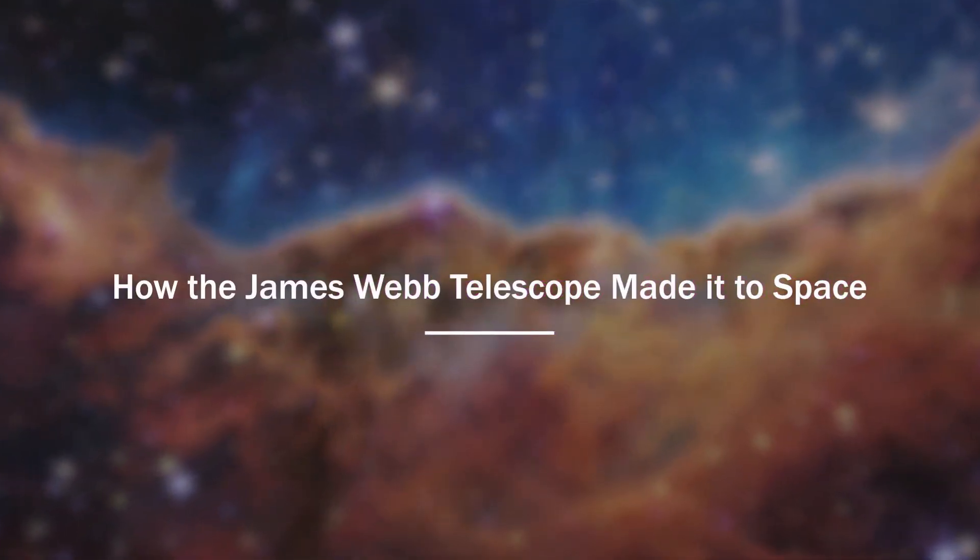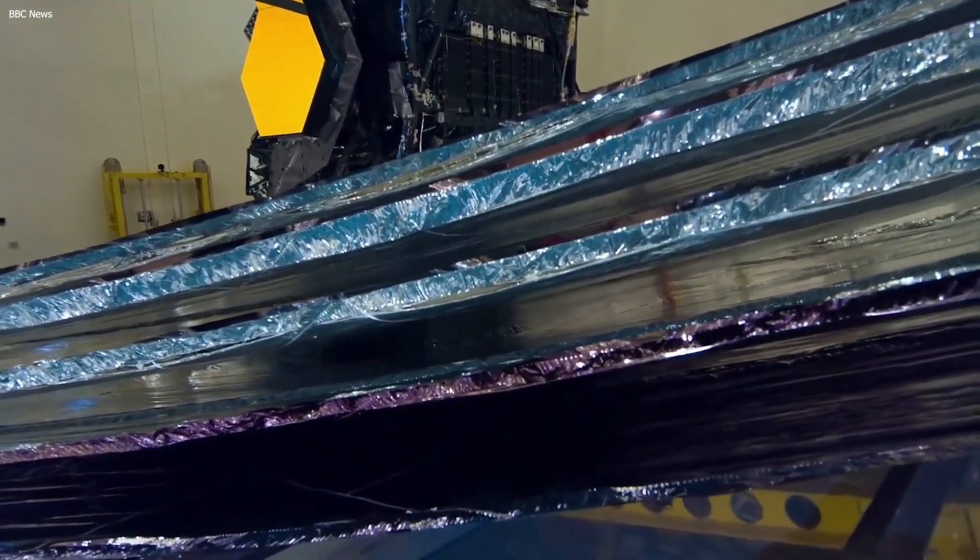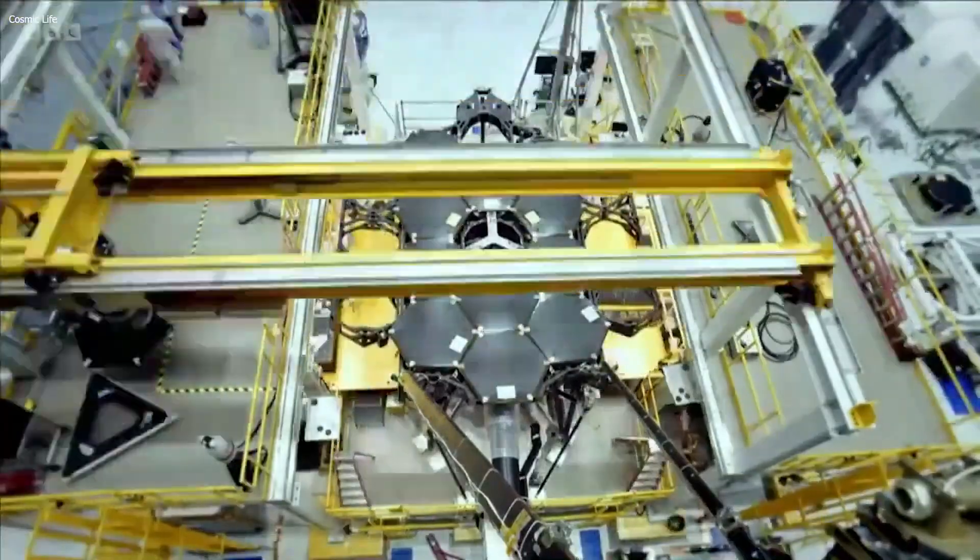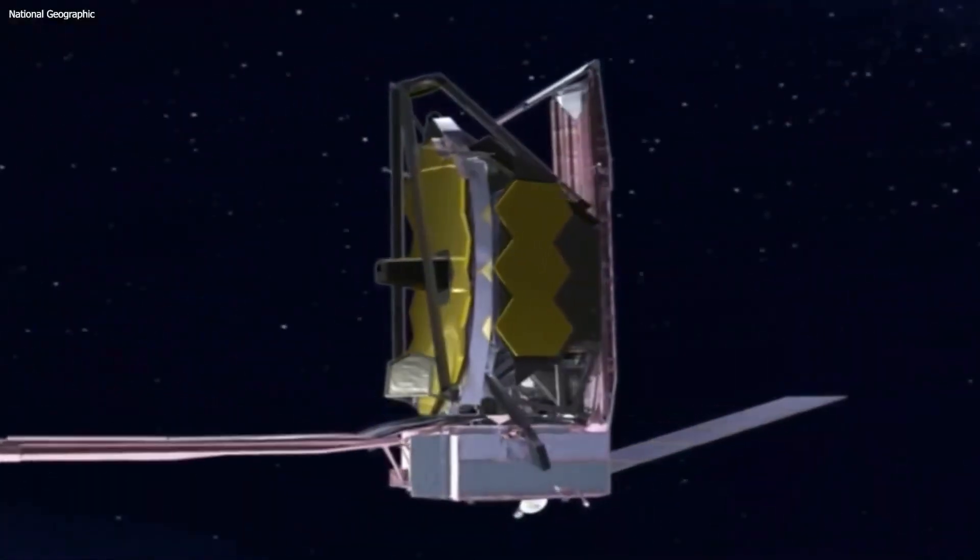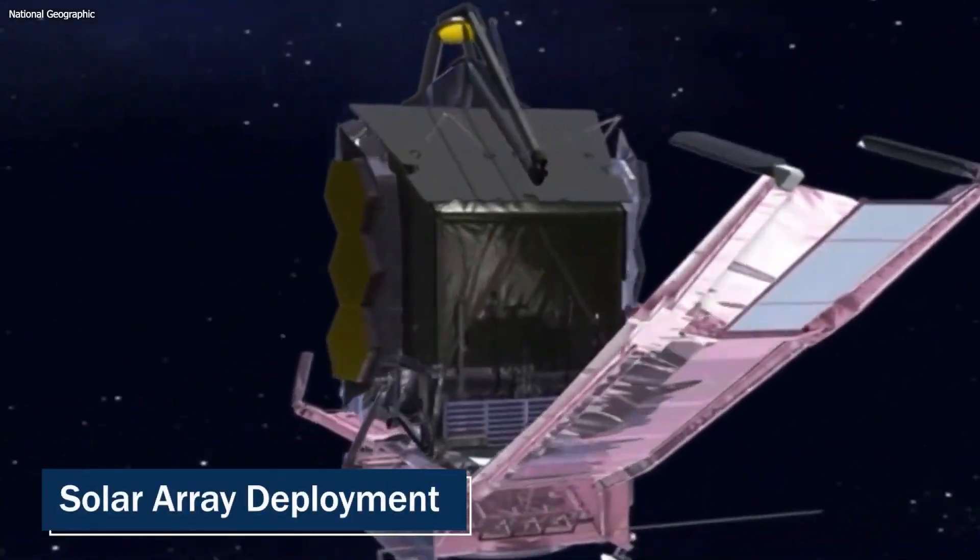How the James Webb Telescope made it to space. Before we get into the discoveries this revolutionary telescope had made, let's take a look at the process it had to go through to make it into space. The first thing was, of course, the launch. The telescope underwent the solar array deployment.